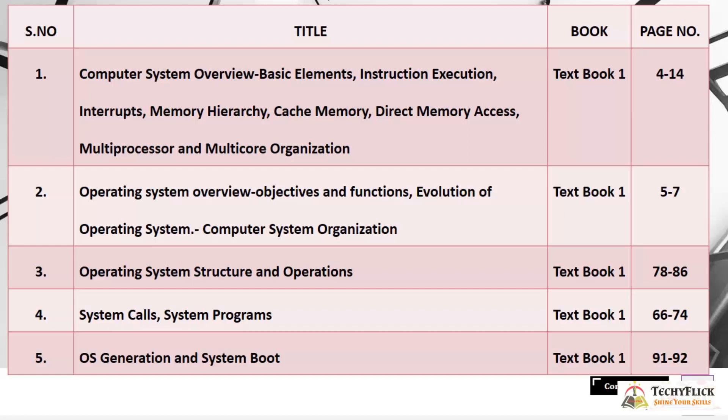Next is System Calls and System Programs, on pages 66 to 74, where you will also need the OS Lab Record for the first experiment. The fifth topic is OS Generation and System Boot from Textbook 1, pages 91 to 92. These topics cover Computer System Overview and Operating System Overview, completing Unit 1.